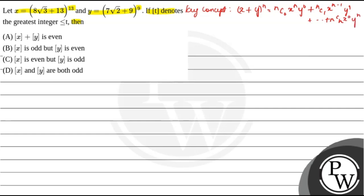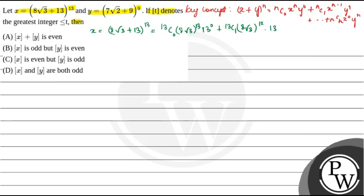Now let us consider x = (8√3 + 13)^13. This can be expanded as C(13,0)·(8√3)^13·13^0 + C(13,1)·(8√3)^12·13^1 + ... up to the 13th term.